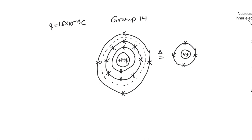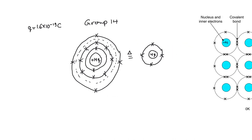Similarly, for group 5 atoms we draw it the same way with plus 5q and five electrons in the outer shell, and for group 3 atoms the same approach. This is a useful shorthand when we only want to focus on what's happening in the outer shell, which is where conduction of current will happen.